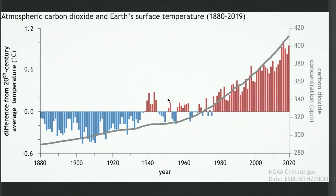Starting in 1880, we see blue bars starting at zero and going down toward minus 0.6. We also see a line starting at roughly minus 0.45. As we scan along the date line, the blue bars gradually get shorter until we hit zero around 1940. From here we see a few red vertical bars rising from the zero line, then a section with some red and some blue.